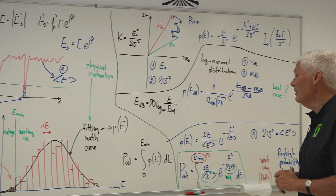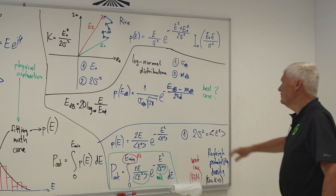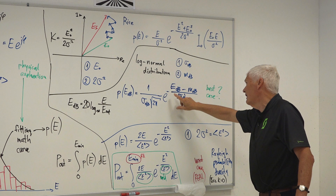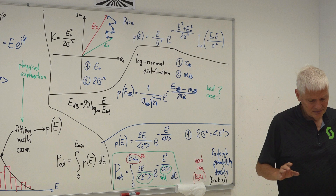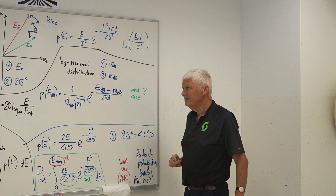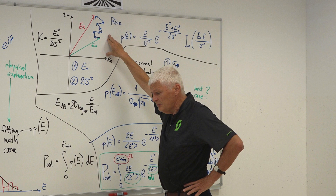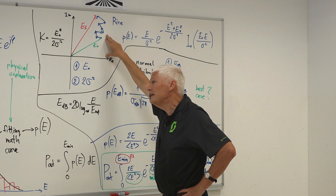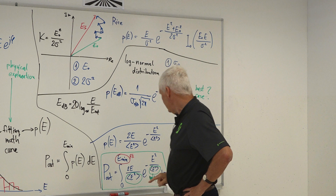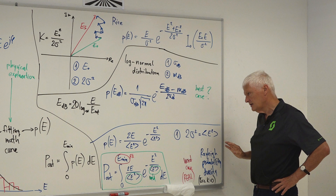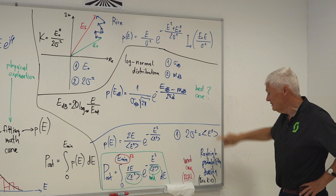The Rayleigh distribution is the real thing — it's also the worst case. The Rice distribution could be considered, but usually in mobile connections we do not have a direct line of sight to the transmitter, so E0 does not exist. The Rice distribution then reduces to the Rayleigh distribution. The log-normal distribution is easy to compute since measurement equipment usually gives results in dB, but it's not realistic.